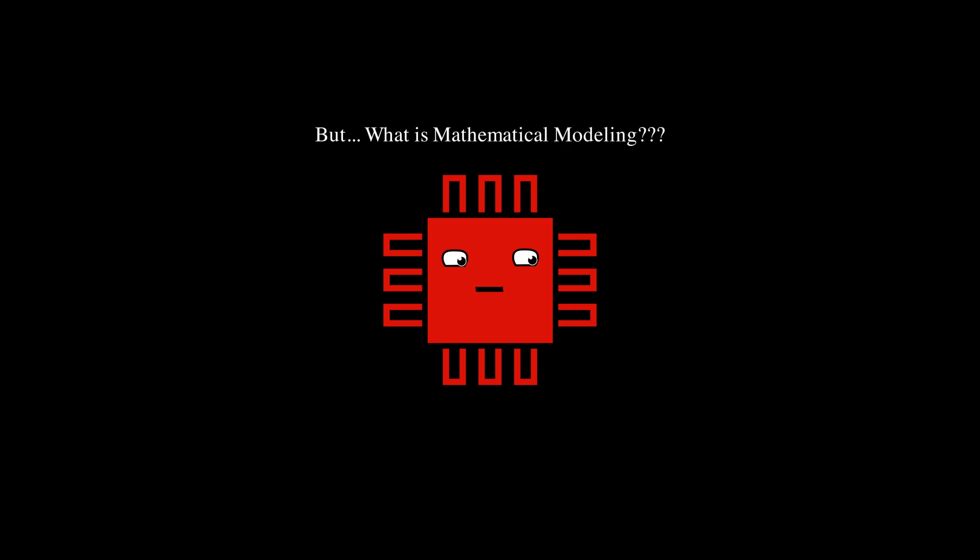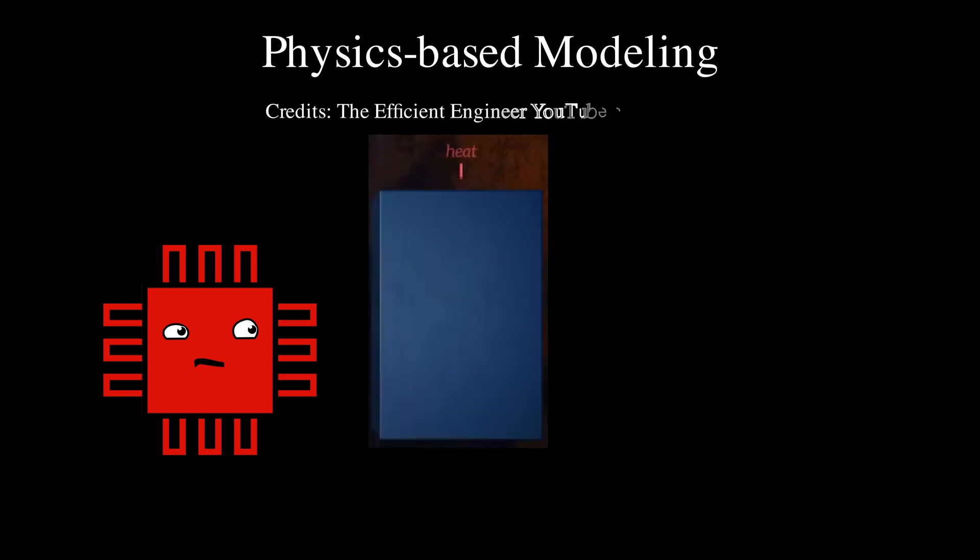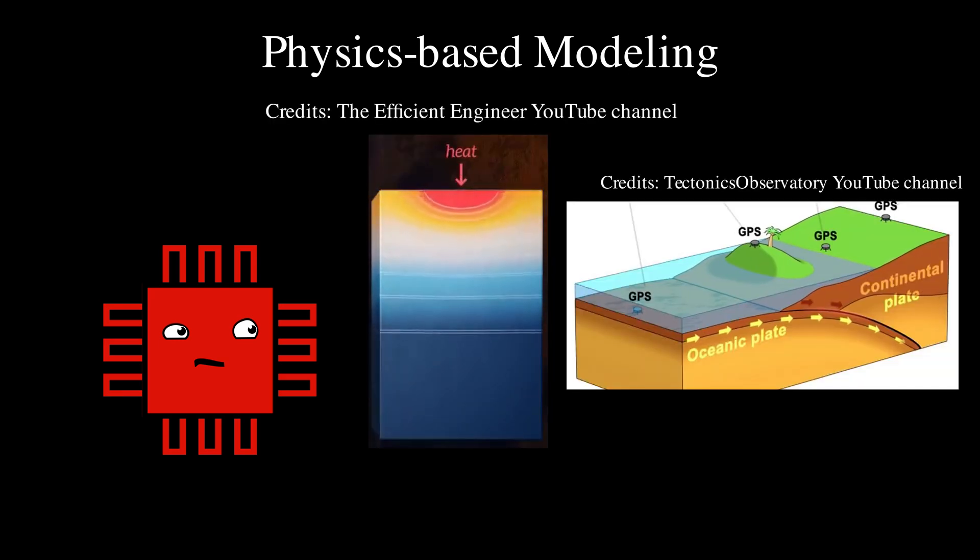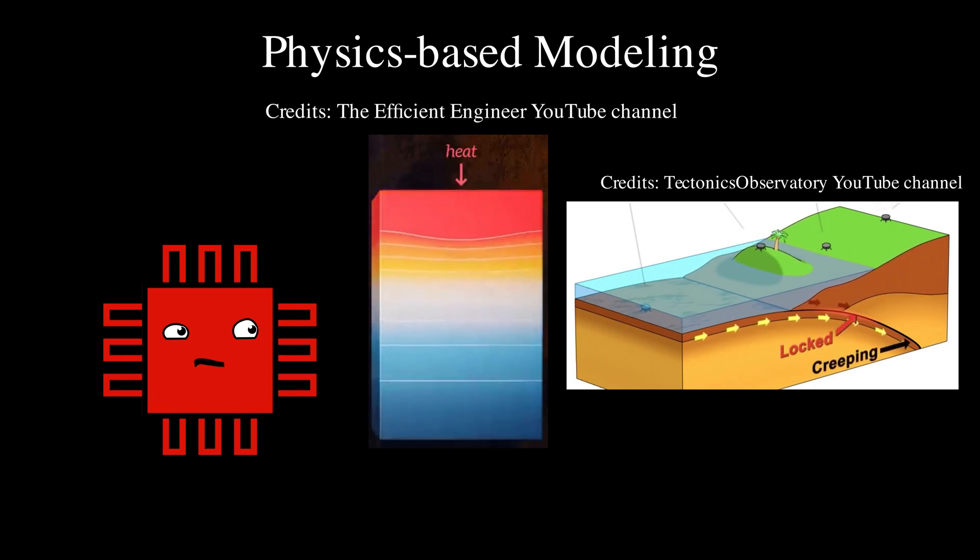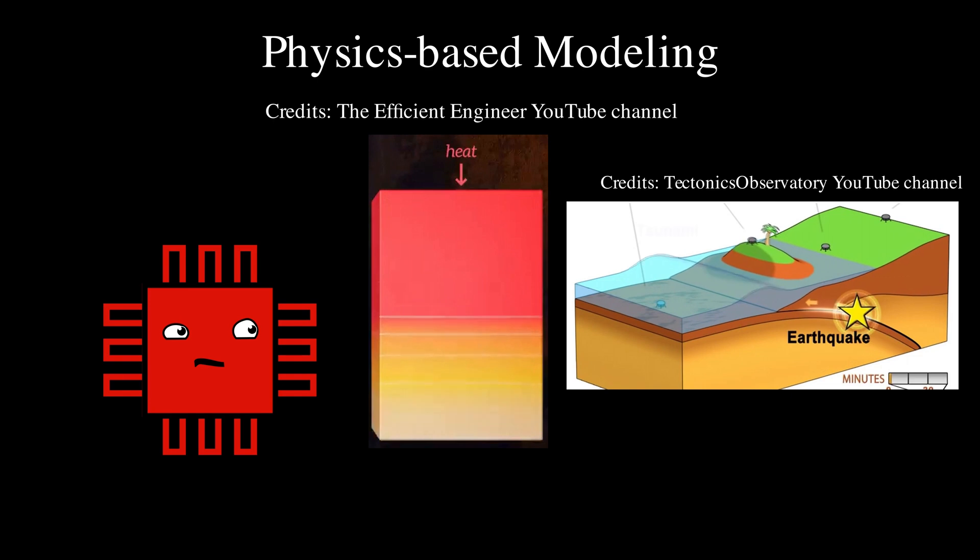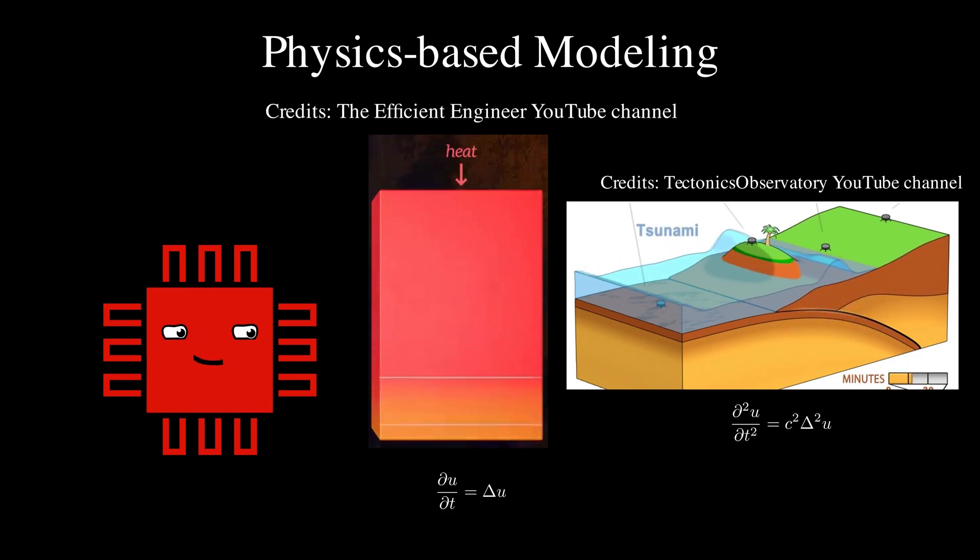Technically speaking, mathematical modeling refers to the process of creating a mathematical representation of a real-world system or phenomena. Since long time, a specific type of modeling known as physics-based modeling has been done to understand natural phenomenons like heat flow and earthquakes. The idea here is to connect the physical observations to a bunch of mathematical equations, and for these examples that would be partial differential equations.